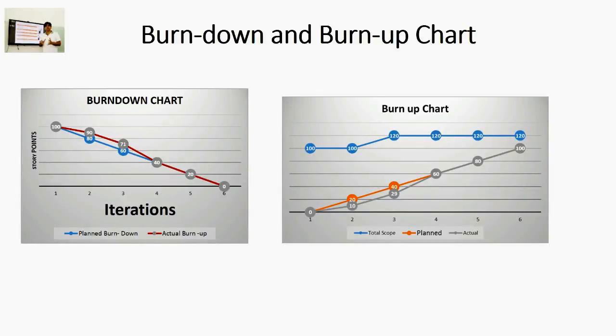In agile projects, information radiators are highly visible displayed techniques used to track the status of the project. An information radiator can be in the form of a chart, summaries and graphs related to the project. Some examples of information radiators are burn up charts, burn down charts, trend charts for velocity, story maps or product road maps.